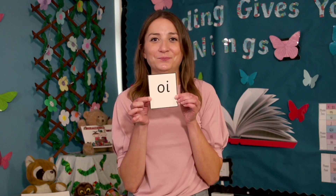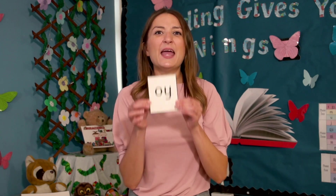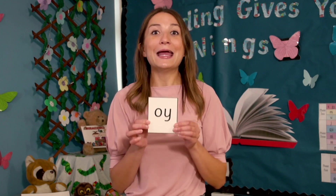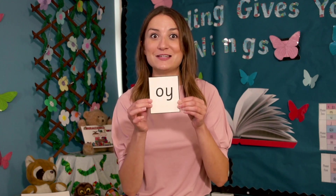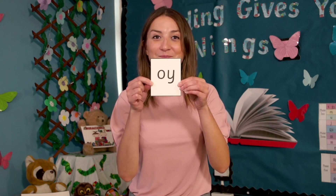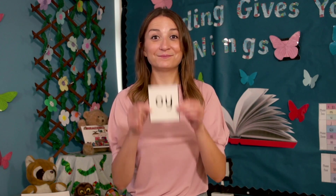We know the sound oi is written like this. Today we're learning that oi can also look like this. Let's read the new grapheme for oi. Say the sound oi each time I show you the digraph oi. You ready? Well done, great reading of oi.